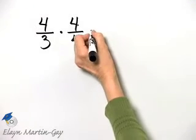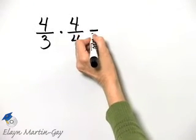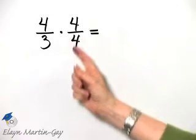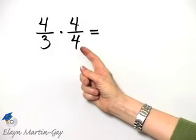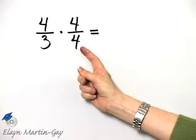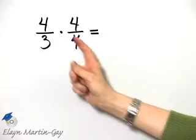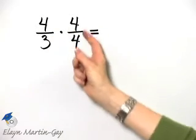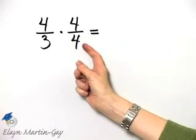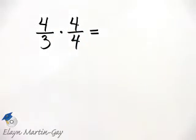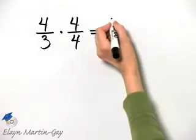Now, by the way, you may just happen to notice that the second fraction is 4 over 4, which is 1. And 4 thirds times 1 is 4 thirds. So if you'd like to work it that way, that's fine.